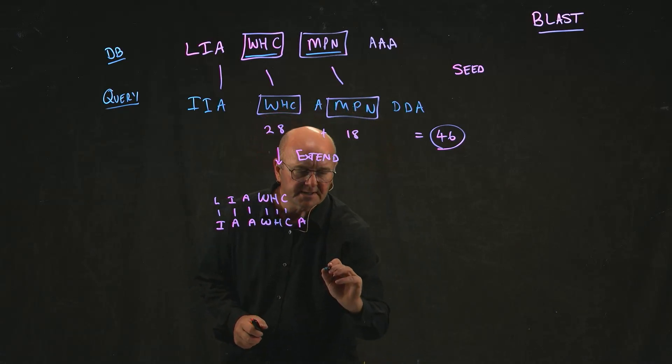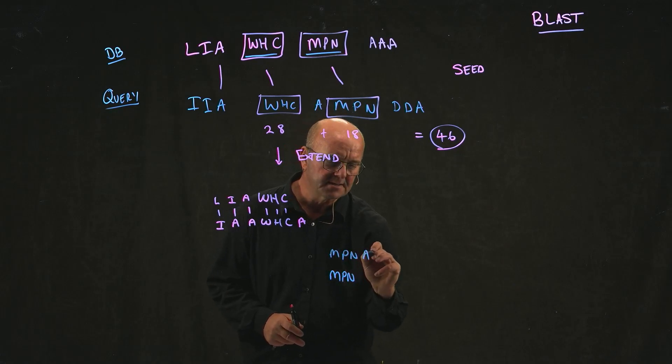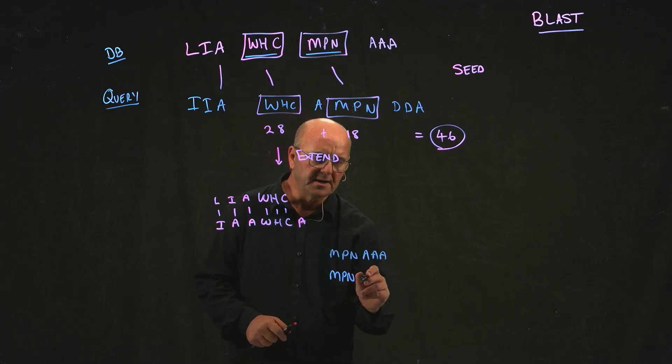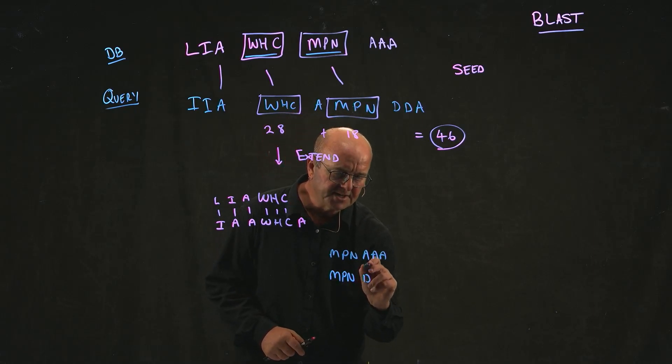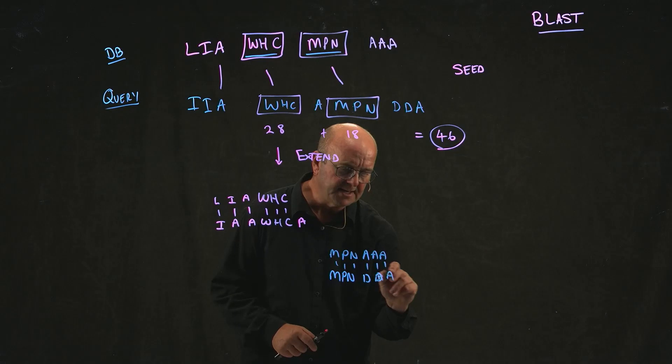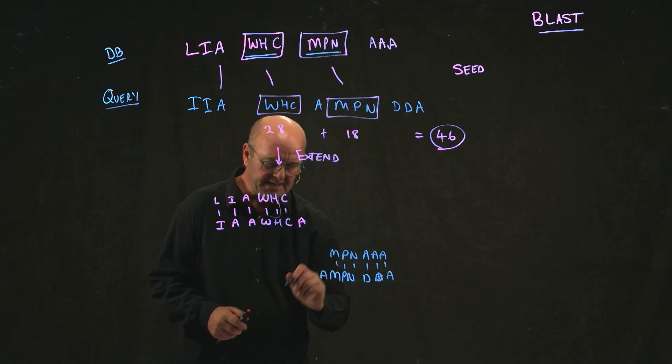Similarly, we can start with the other word. And in our database, we have MPN AAA. And in our query, we can match A to D. And then A to D again. And then A to A. And we can keep matching. And if we try and go the other way, all we have is an A here.